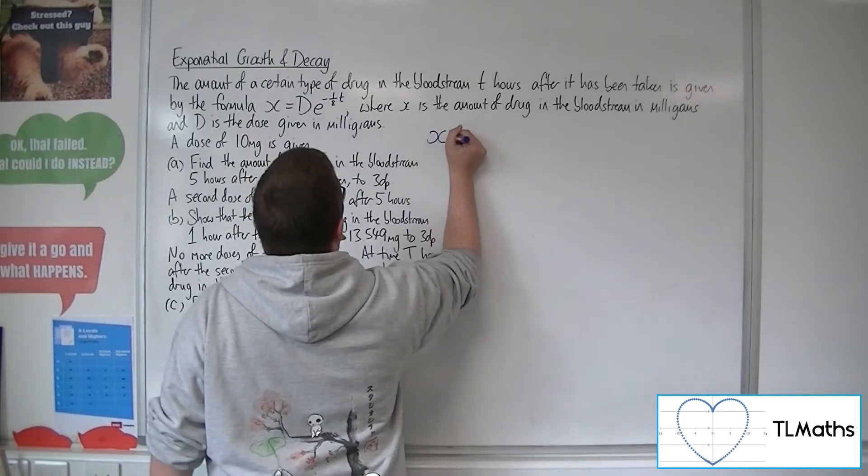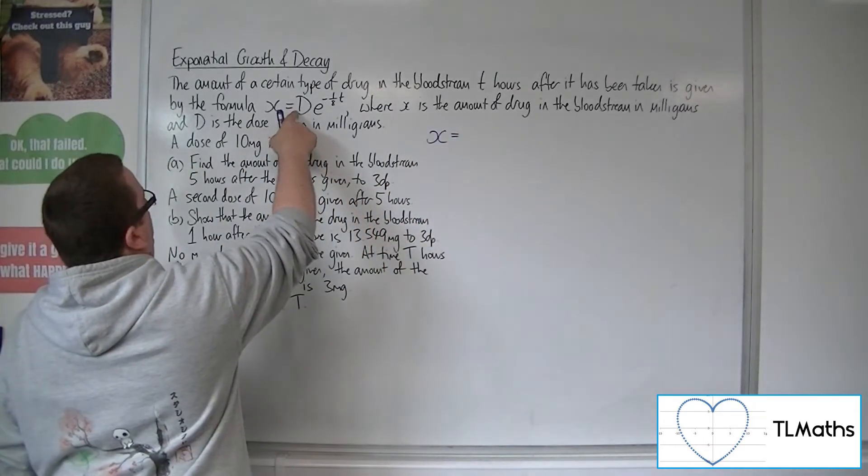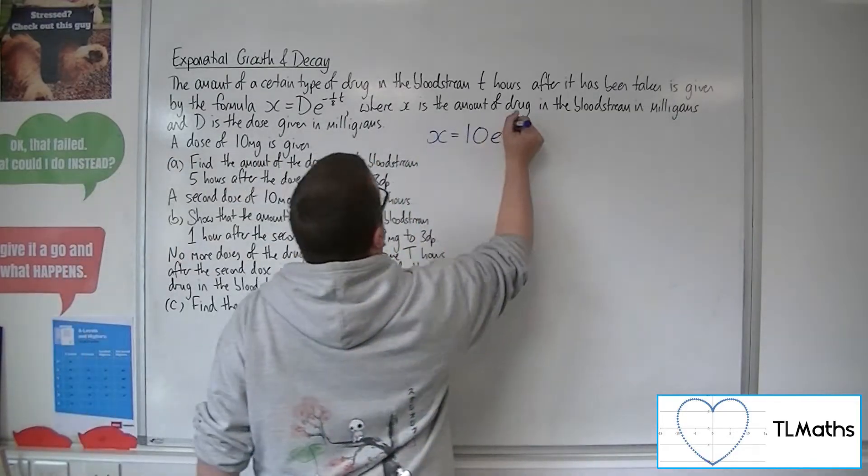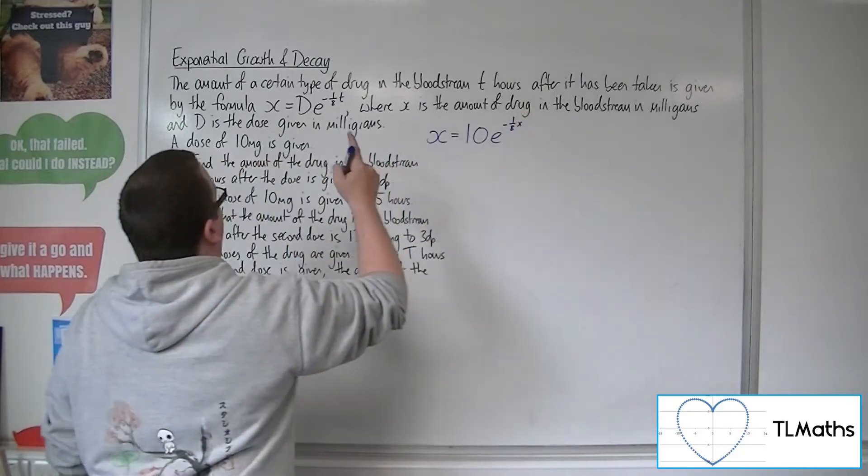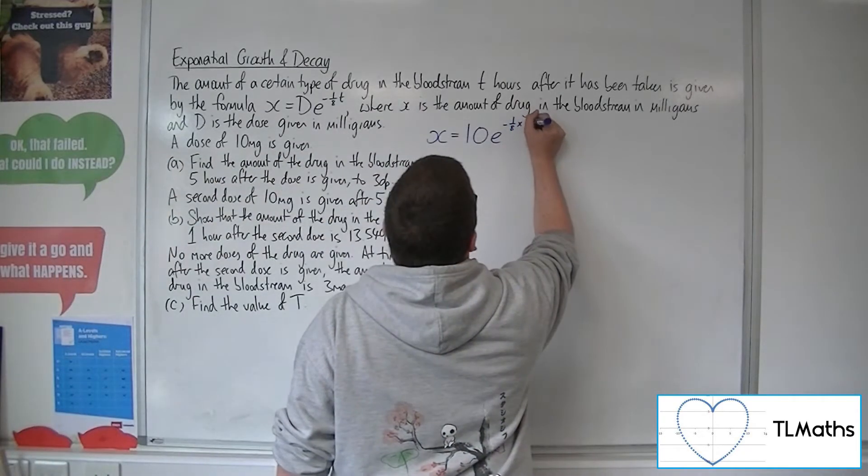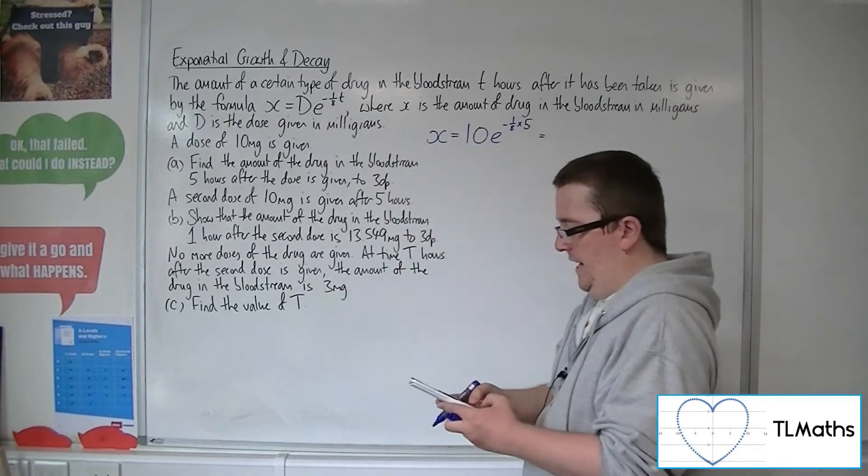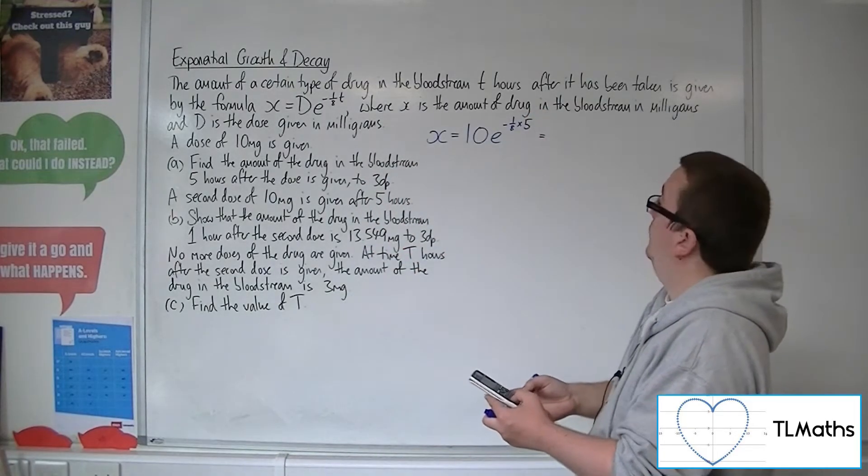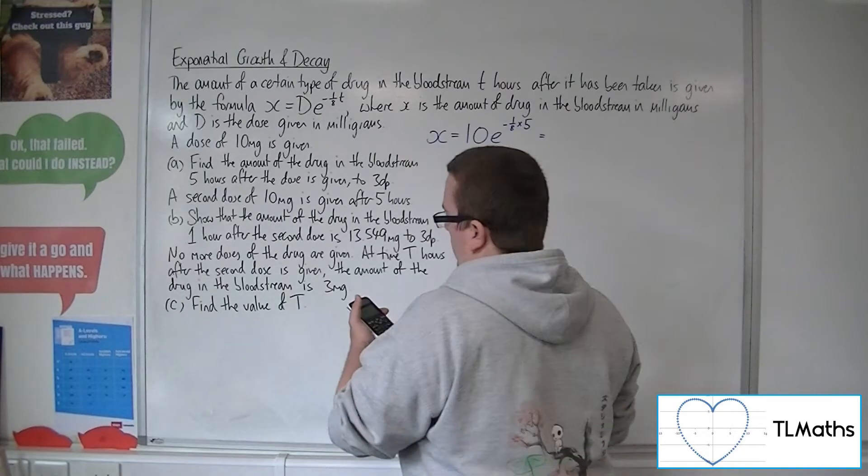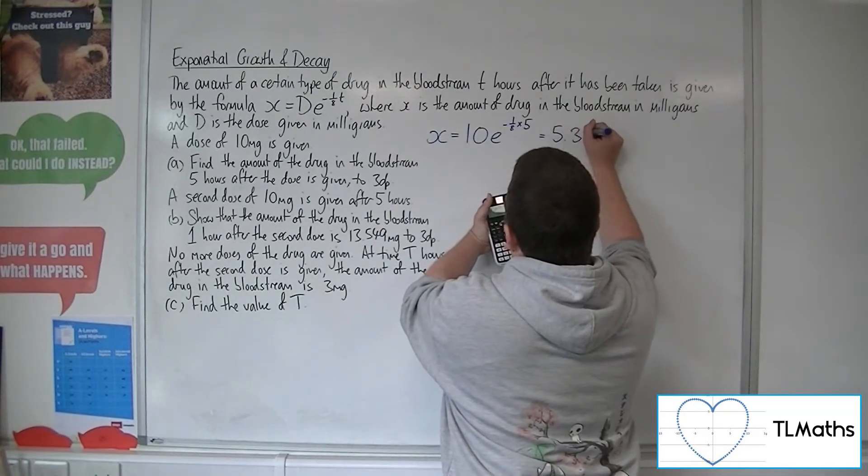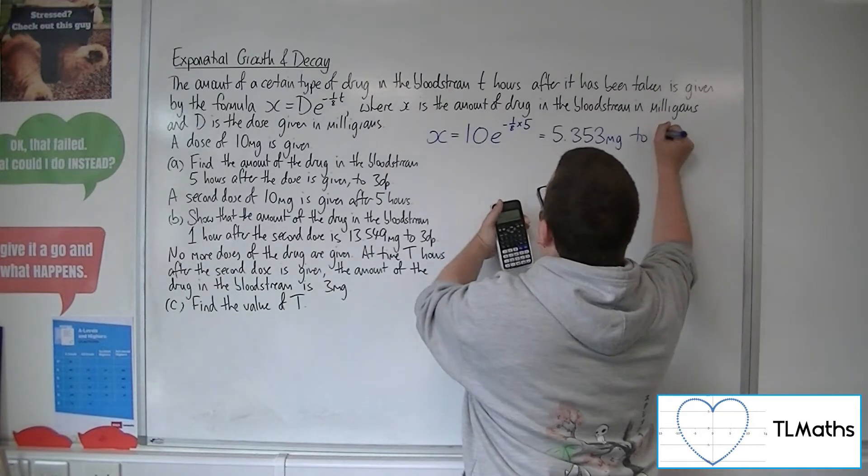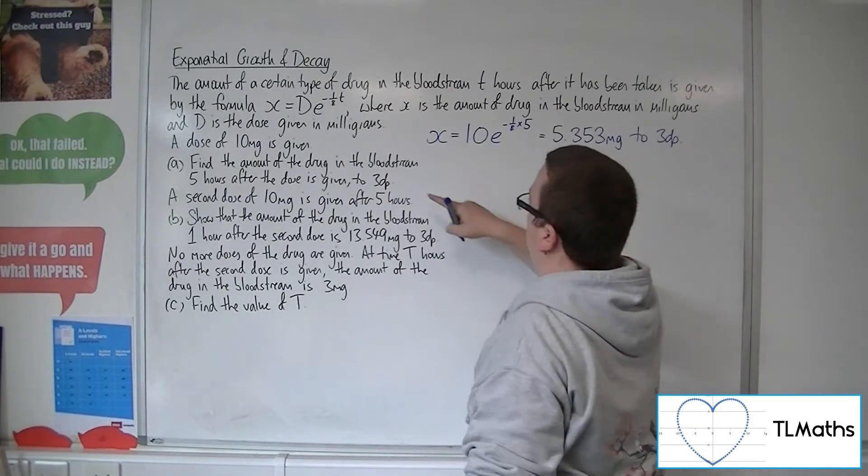Okay, so x will be equal to the dose, which was 10, times e to the minus one-eighth times t, which was 5. So 5 hours. So 10 times e to the minus one-eighth times 5, which is 5.353 milligrams to three decimal places as required.